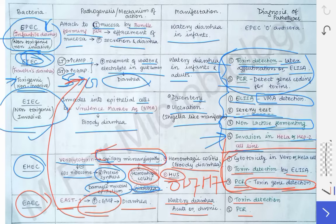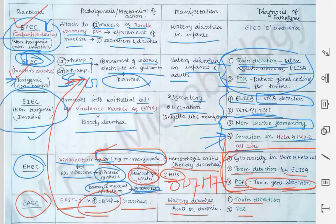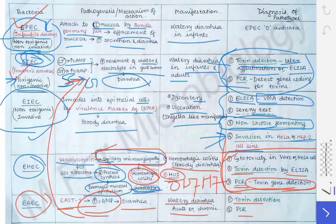That covers all the pathotypes of the diarrhoeagenic E. coli. If you remember this table, it becomes easy to answer any short note question. Whether they ask about infantile diarrhea (EPEC), traveler's diarrhea (ETEC), or any other pathotype, you can describe the relevant E. coli clearly. Note that traveler's diarrhea can also be caused by other organisms, but describing ETEC is sufficient at the UG level.